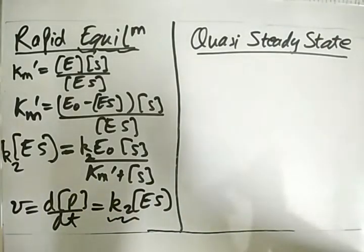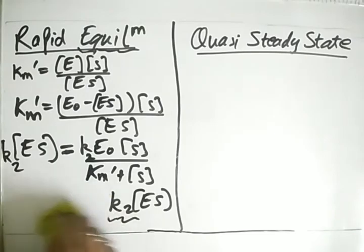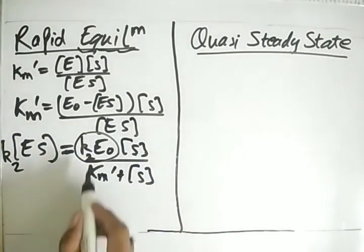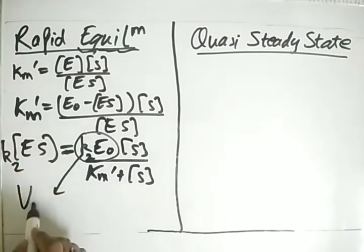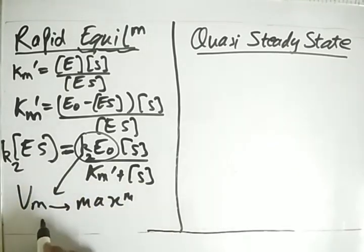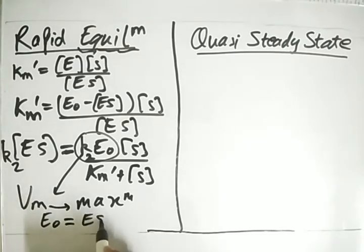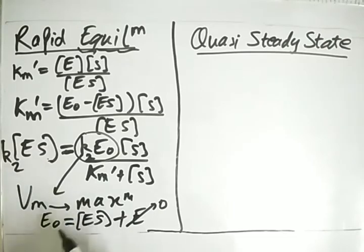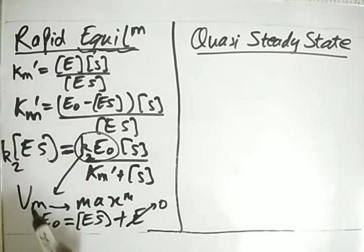Notice that k2·E0 can be written as Vm, the maximum rate of product formation. This maximum occurs when all of the enzyme E0 has formed the ES complex, so free E is zero and k2·ES = k2·E0 = Vm.